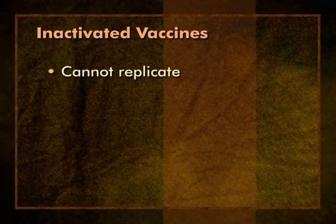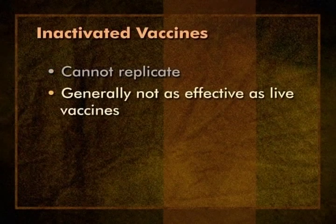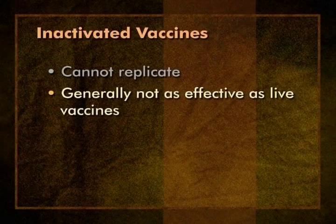The basic immune response process is similar with both live and inactivated vaccines. The main difference is that live antigens replicate until the immune system stops them. Inactivated agents cannot replicate, so the immune system must usually be exposed to the antigen several times in order to produce immunity. Here are some other characteristics of inactivated vaccines. Inactivated vaccines are not alive, so they cannot replicate and are non-infectious. Because they are non-infectious, they can be administered to an immunosuppressed person. In general, inactivated vaccines are not as effective as live attenuated vaccines, meaning that estimates of vaccine efficacy are usually lower than with live vaccines.